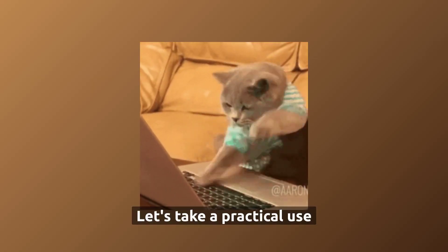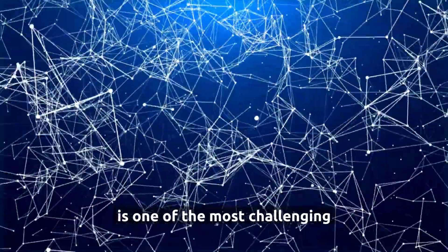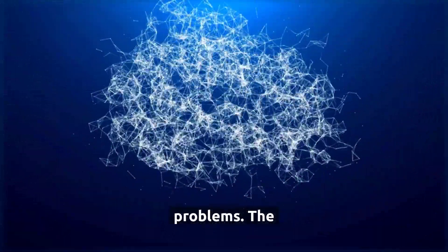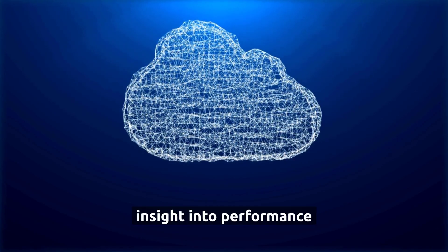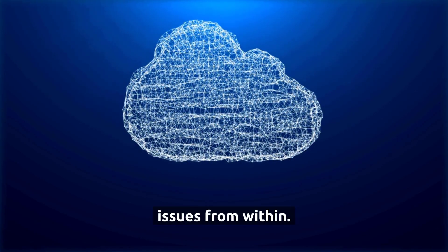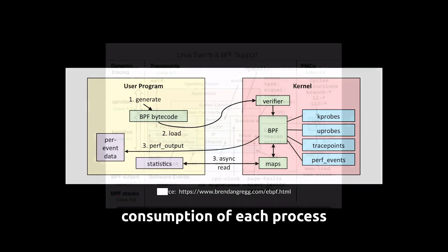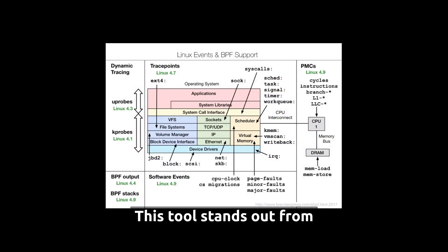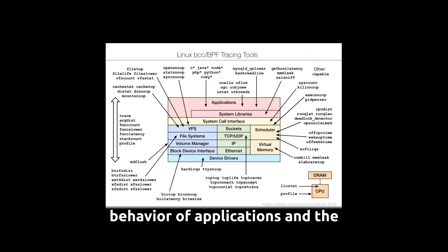Let's take a practical use case to better understand the benefits. Scaling in Kubernetes is one of the most challenging problems. The logs and metrics provided by the orchestration engine are not always sufficient to gain insight into performance issues from within. Using eBPF, it is possible to capture and analyze the resource consumption of each process running in the cluster. This tool stands out because it offers highly granular data for each process, providing unparalleled insight into the runtime behavior of applications and the system itself.